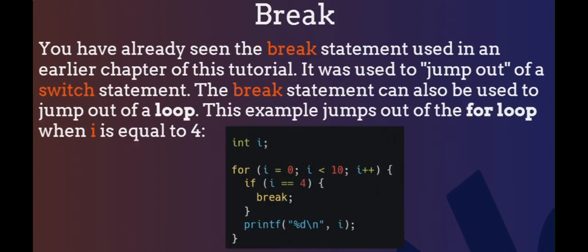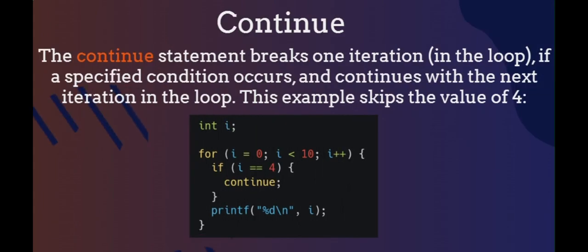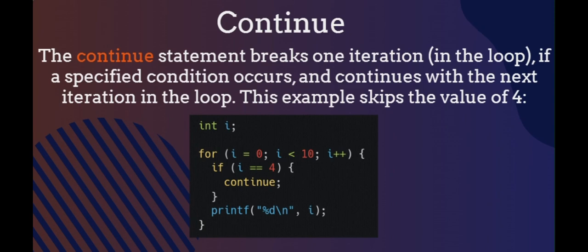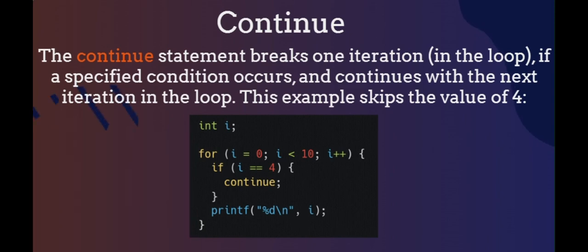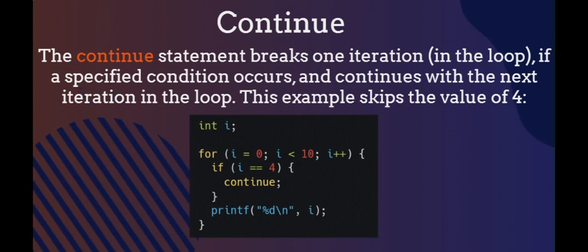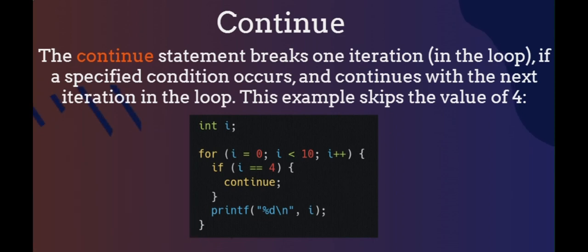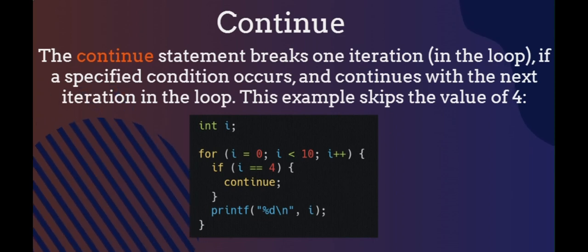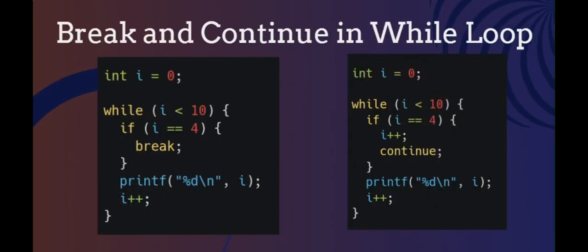Break. You have already seen the break statement used in an earlier chapter of this tutorial — it was used to jump out of a switch statement. The break statement can also be used to jump out of a loop. This example jumps out of the for loop when i is equal to 4. Continue: the continue statement breaks one iteration in the loop if a specified condition occurs, and continues with the next iteration in the loop. This example skips the value of 4. You can also use break and continue in while loops.